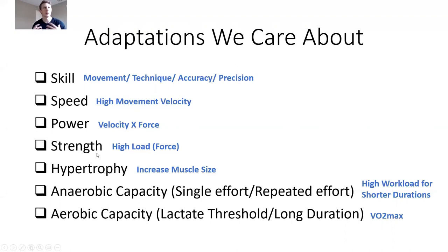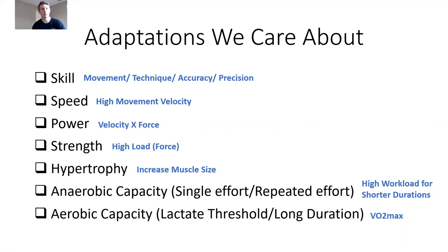With strength, we're developing the maximum load or force we can produce from muscle groups within movement patterns. Key aspects include rate of force development and maximal strength. Hypertrophy is strictly an increase in muscle fiber size or cross-sectional area. Hypertrophy allows for a greater expression of force, but hypertrophy is not strength — it is the foundation to express a higher level of strength.